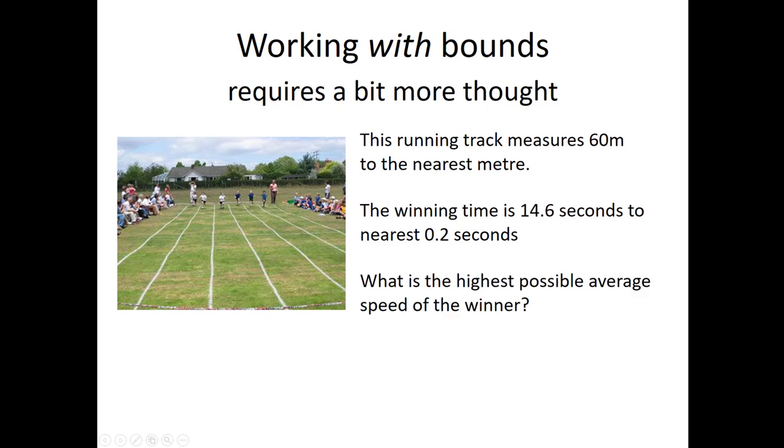The question I want answered is, what is the highest possible average speed of the winner? Now, I haven't simply said, what was the average speed of the winner? Because, of course, we don't know the measurements exactly. Speed is simply distance over time. But what was the distance run? Well, all we know is that it was somewhere in between 59.5 and 60.5 metres. In the same way, the true winning time was between 14.5 and 14.7 seconds. And now you have to start thinking a bit.